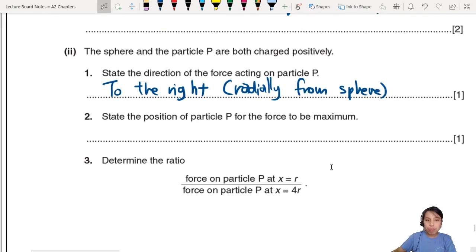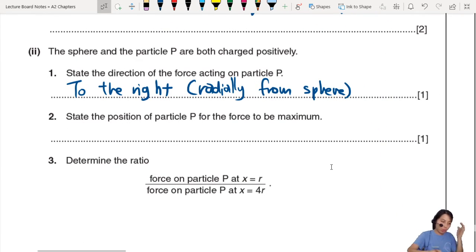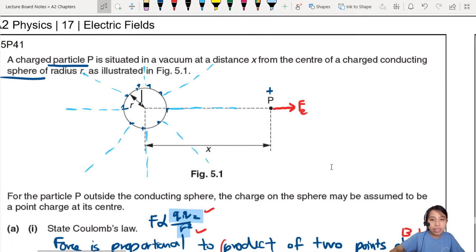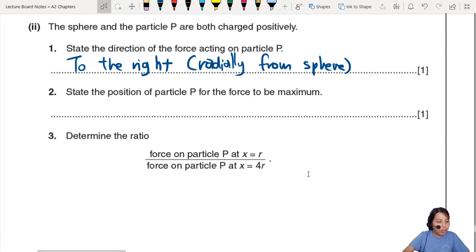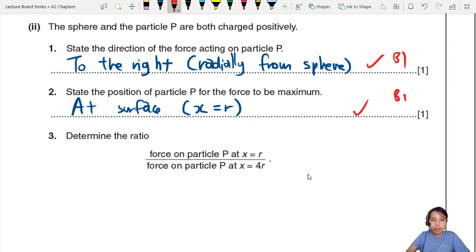The position would be at the surface of the sphere, where X is the smallest possible. At surface, this is the smallest possible value of X, where X equals to R. All this is 1 mark each.